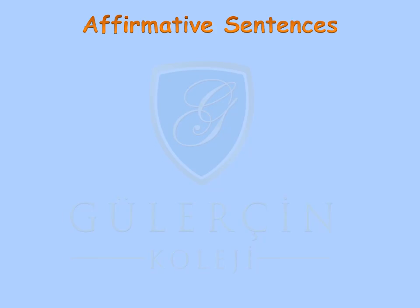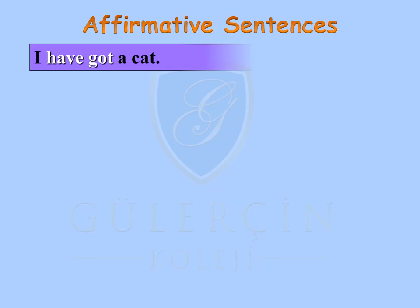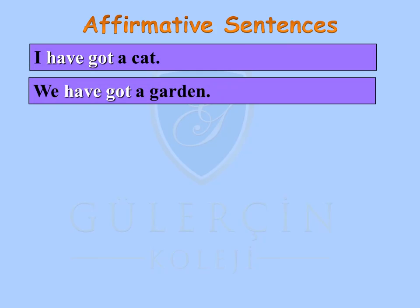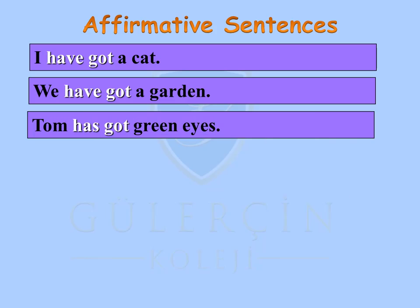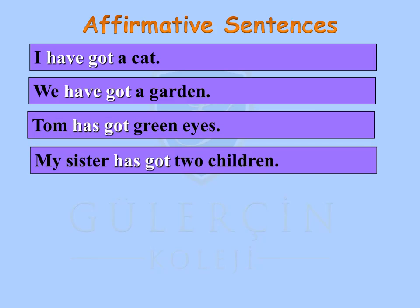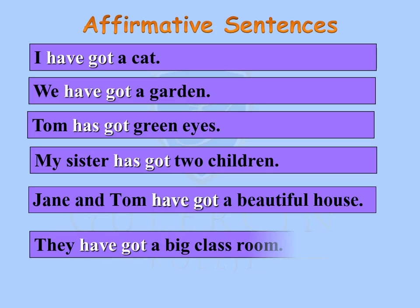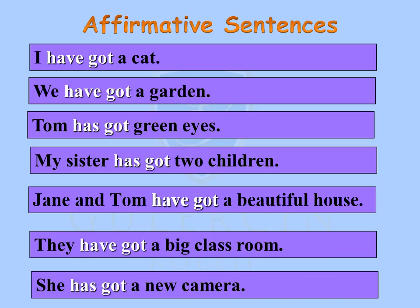Affirmative sentences: I have got a cat. We have got a garden. Tom has got green eyes. My sister has got two children. Jane and Tom have got a beautiful house. They have got a big classroom. She has got a new camera.